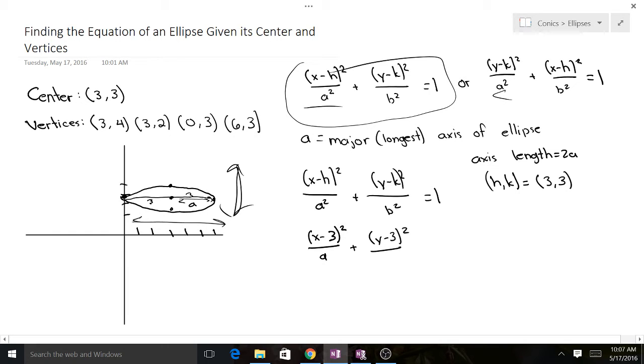Well, we can figure out b squared. b squared is just the length of the distance between the center and the minor vertices. So this is b, and this value is also b, because the minor length, the minor axis length, equals 2b.